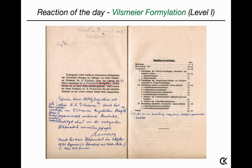The interesting thing is that if you look at the introduction of Haag's PhD thesis, there is a handwritten note by Vilsmeier. In that note, he actually claims that the Vilsmeier formylation is his sole invention and that his PhD student Haag only repeated certain experiments and confirmed his work.